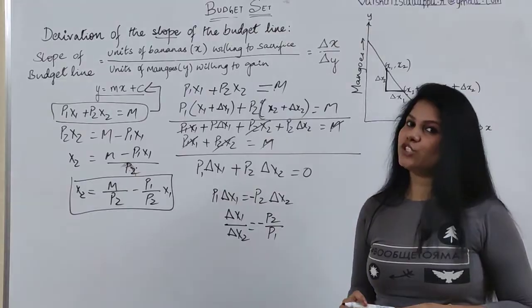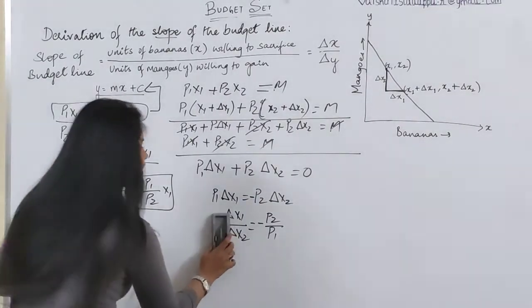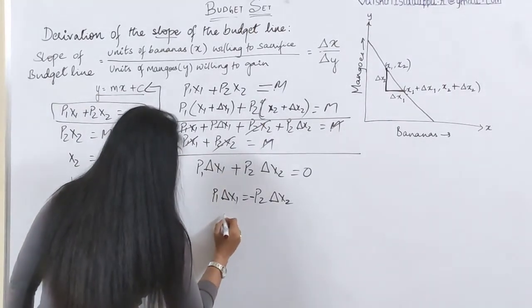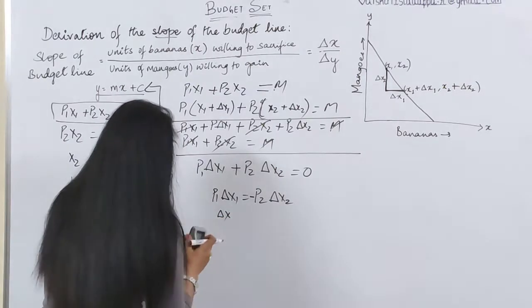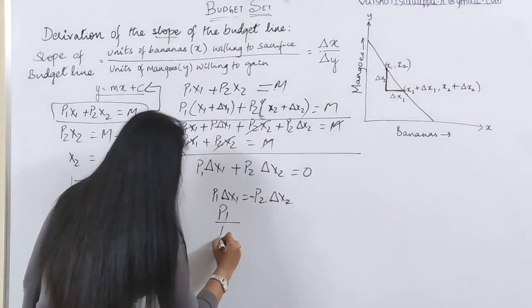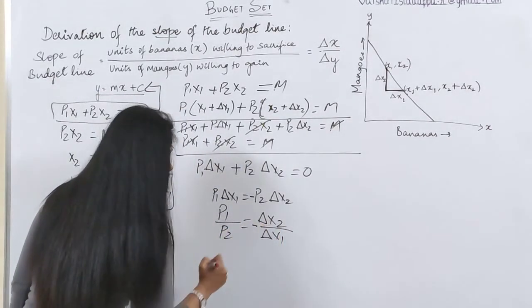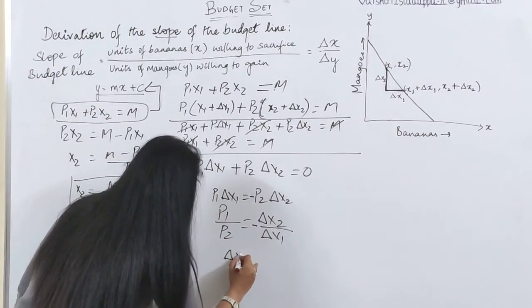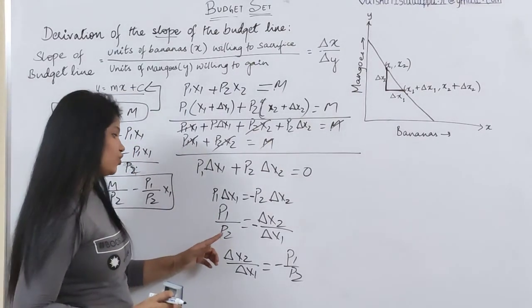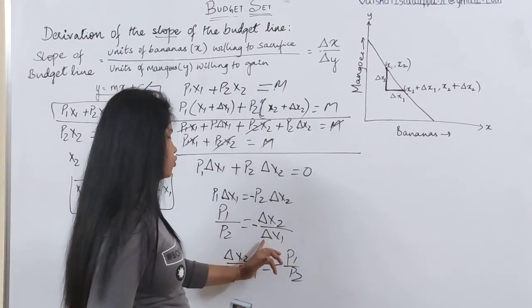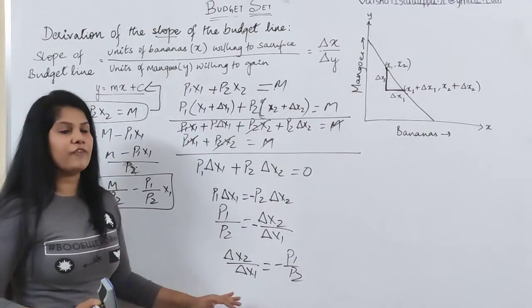I made one mistake earlier — it should be p1/p2, not p2/p1. Sorry for that. So the final correct derivation is: change in x2 divided by change in x1 equals minus p1 divided by p2. That is, Δx2/Δx1 = −p1/p2. This is the final derivation of the slope of the budget line. In your textbook it is not much clearly solved, so I hope you understood exactly what it is.